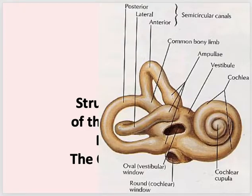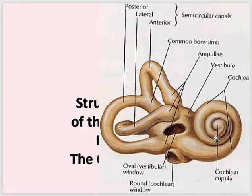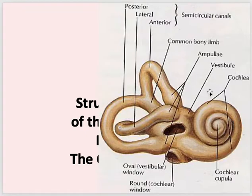The inner ear is also called the labyrinth. It consists of the cochlea and the vestibule. The cochlea deals with hearing and the vestibule deals with balance. Inside the cochlea there are hair cells which convert mechanical energy from sound into electrical impulses. When the stapes vibrates, it moves fluid inside the cochlea, generating electrical signals transmitted by the cochlear division of the eighth cranial nerve — the vestibulocochlear nerve.